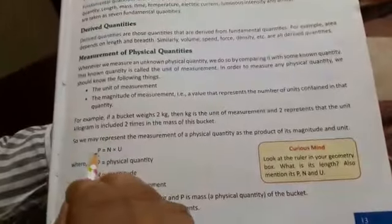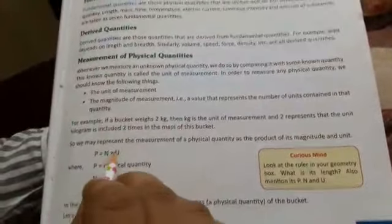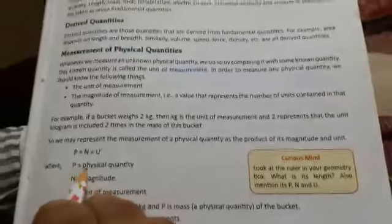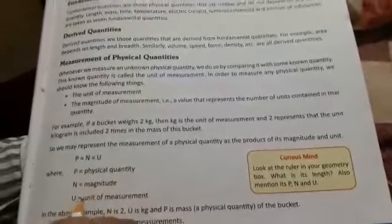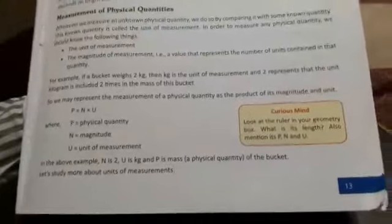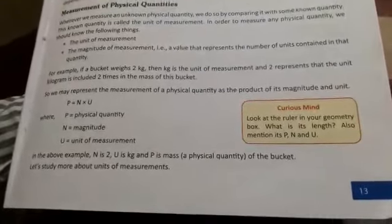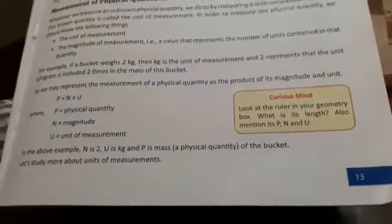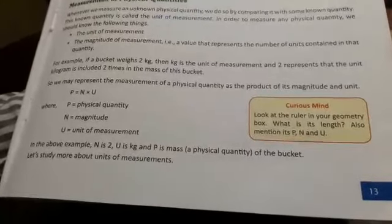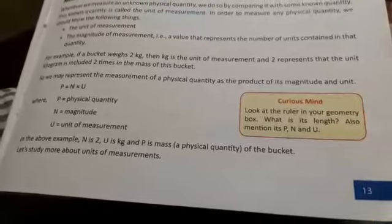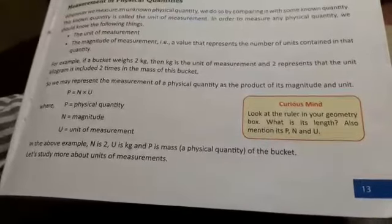So P is equal to n into u. Here P stands for physical quantity, n stands for magnitude, and u for unit of measurement. In the above example, n is 2, u is kg (kilogram), and P is mass, a physical quantity of the bucket.